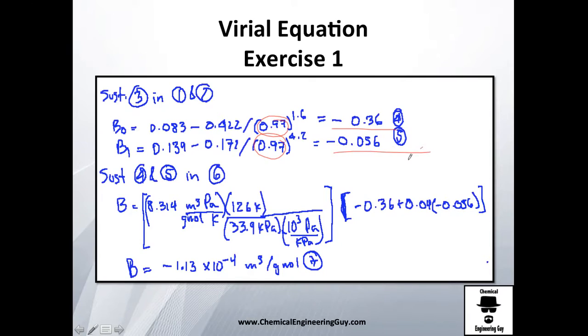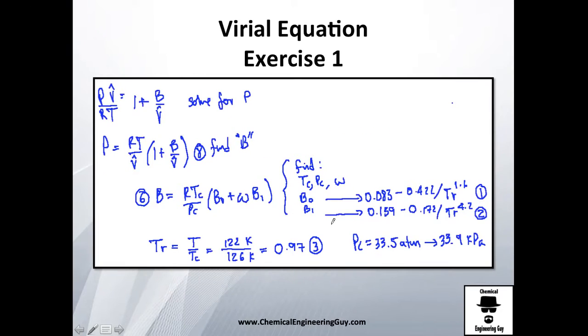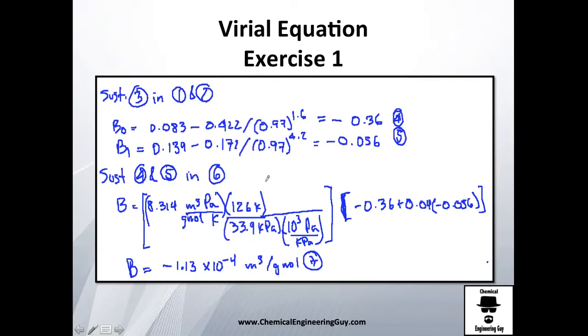Get B0 here, B1 here, equations 4 and 5 respectively. I'm going to use equation number four to substitute here and equation number five to substitute here. Acentric value I have, it is 0.04 which is here. I have everything.